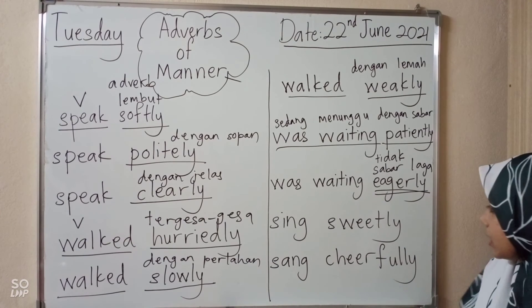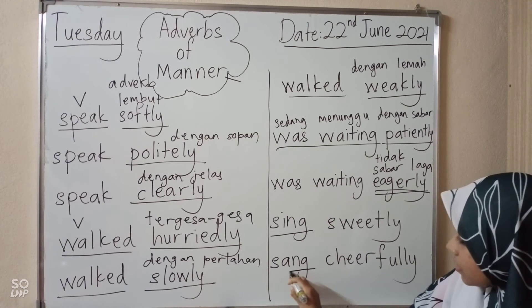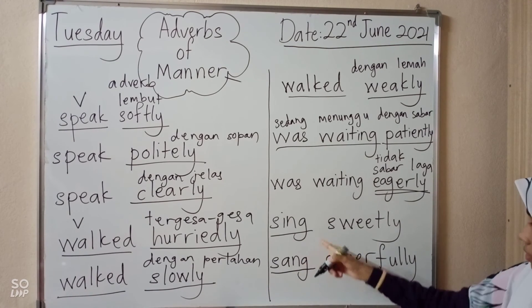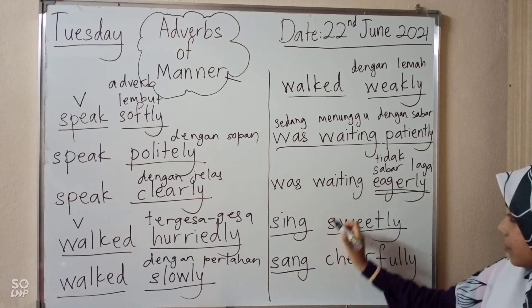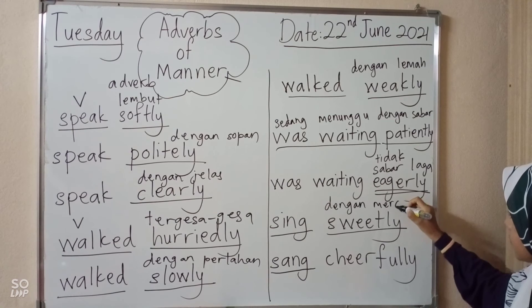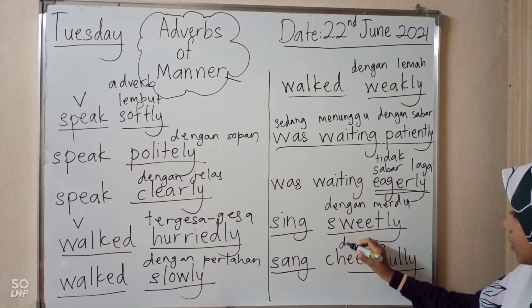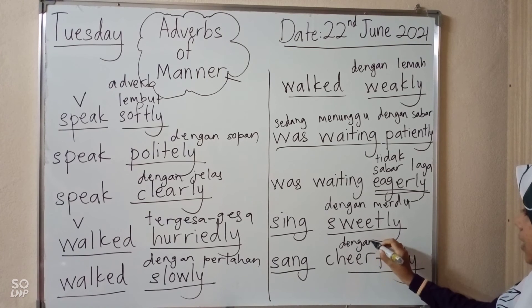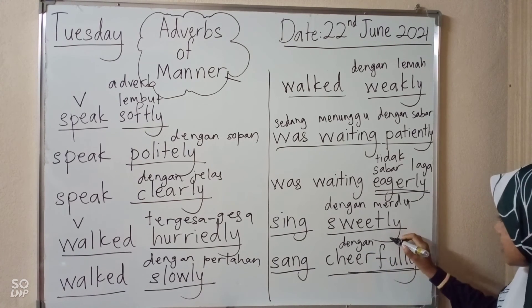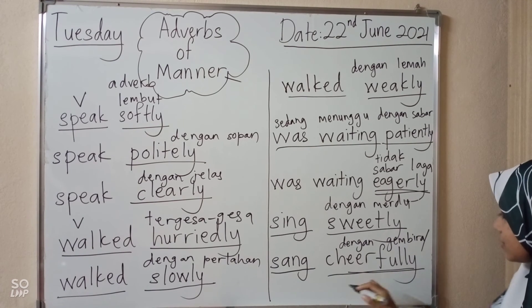Next one — the past tense for 'sing' is 'sang.' Sing sweetly — dengan merdu; sang cheerfully — dengan gembira, dengan ceria.